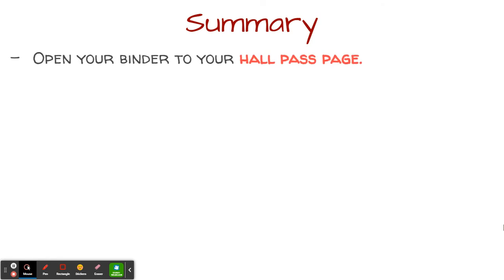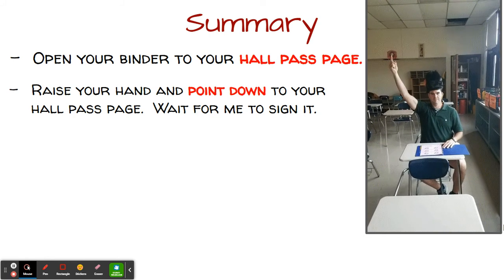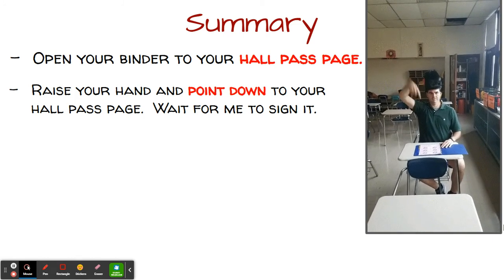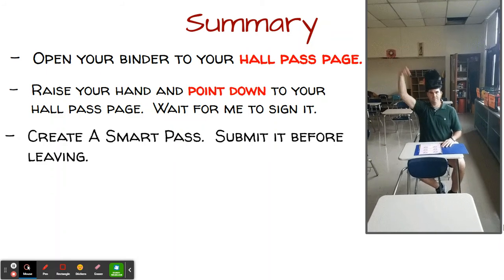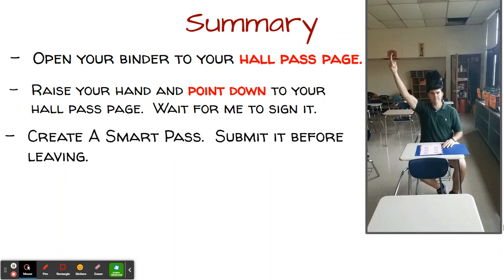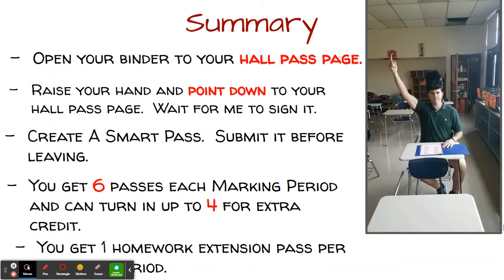To summarize today's video: in order to leave the classroom, open up your binder to that pink hall pass page, raise your hand and point down — that is your silent cue to me that you need to leave. Wait for me to sign or initial your hall pass, then create a smart pass and submit that before you leave the classroom. Remember, you get up to six hall passes each marking period, you can submit four of those for extra credit, and your hall pass page also includes a homework extension pass — you get one of those per marking period.